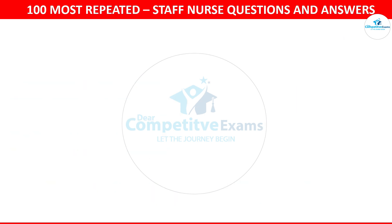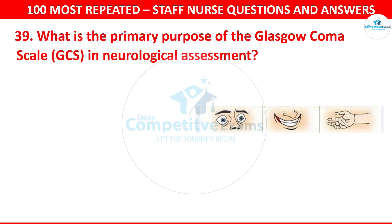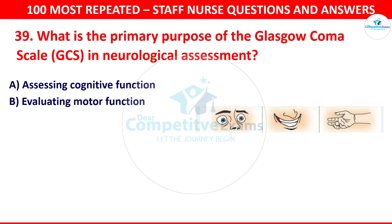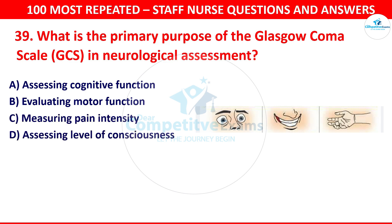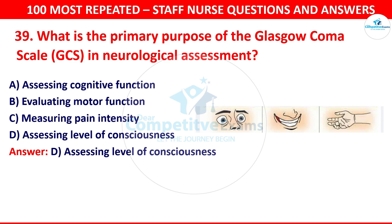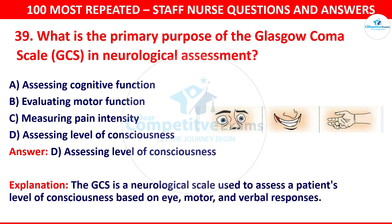Question number 39: What is the primary purpose of the Glasgow Coma Scale in neurological assessment? Options are assessing cognitive function, evaluating motor function, measuring pain intensity, or assessing level of consciousness. The correct answer is assessing level of consciousness. The GCS is a neurological scale used to assess a patient's level of consciousness based on eye, motor, and verbal responses.